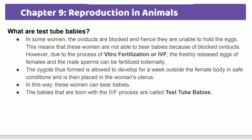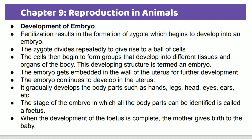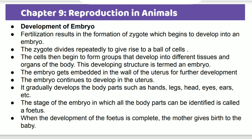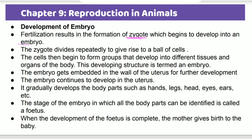This brings us to test tube babies. In some women, the oviduct is blocked. In this process, the egg is fertilized outside the woman's body, and the zygote is allowed to develop for a week outside before being inserted back into the female body.